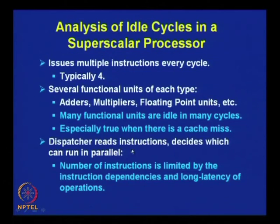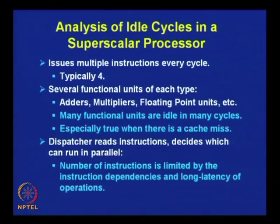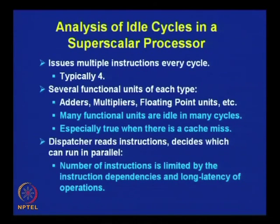The dispatcher reads instructions and decides which can run in parallel. Instructions are fetched by the fetch unit, then decoded, then sent to the dispatch unit. The dispatch unit identifies which instructions can be parallelly issued to the functional units available inside the processor. It has been found that the number of instructions is limited by instruction dependencies and long latency operations. Because of these reasons, the number of instructions that can be issued is very much limited.